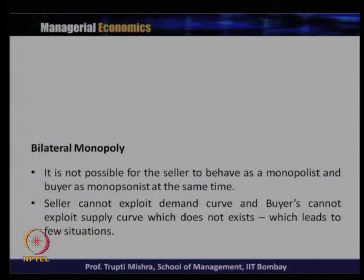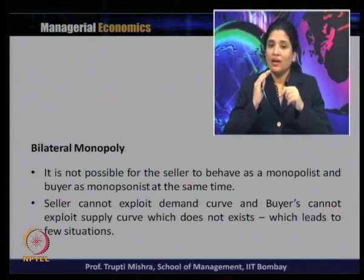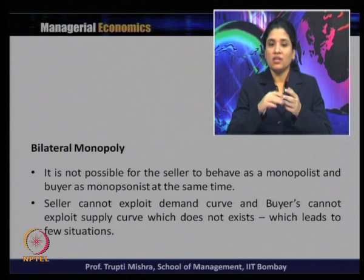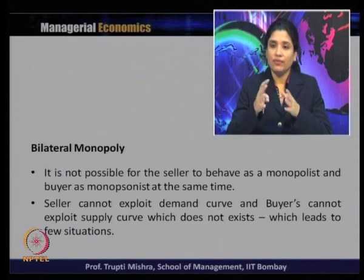There is interdependence when it comes to maximizing profit. If only the monopolist or only the monopsonist influences price and output, they cannot maximize profit, and it is not possible to independently influence price and output. So it is not possible for the sellers to behave as a monopolist, and it is not possible for the buyers to behave as a monopsonist at the same time. Sellers cannot exploit the demand curve and buyers cannot exploit the supply curve, which leads to a few situations.